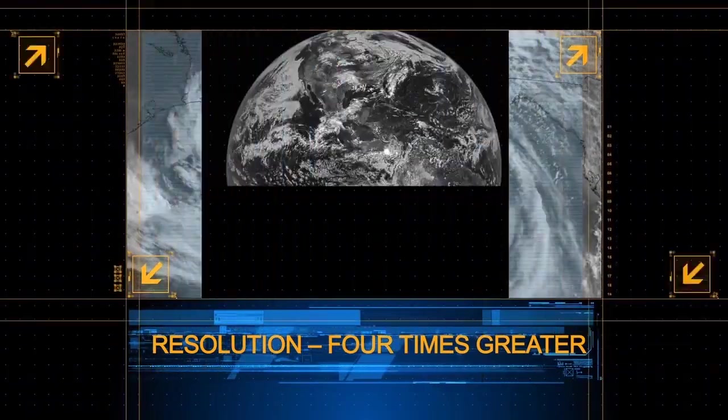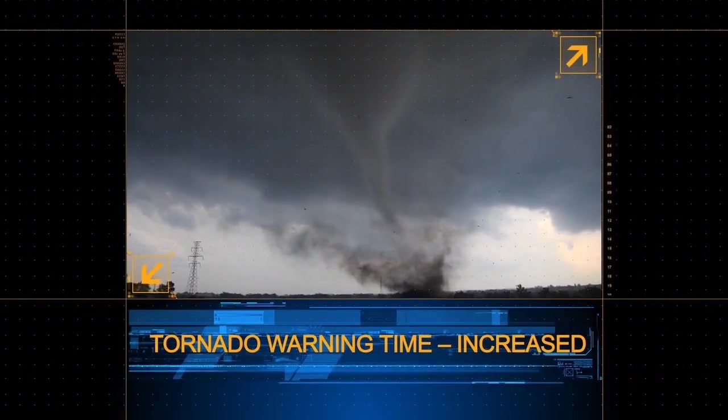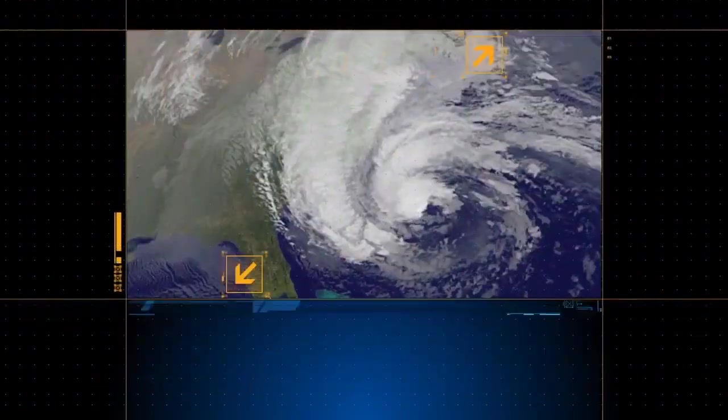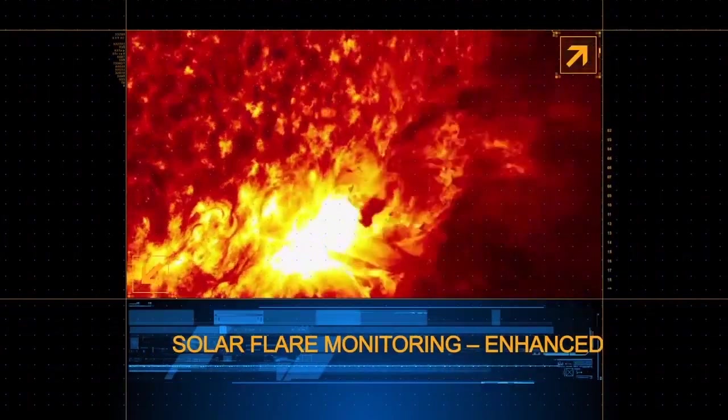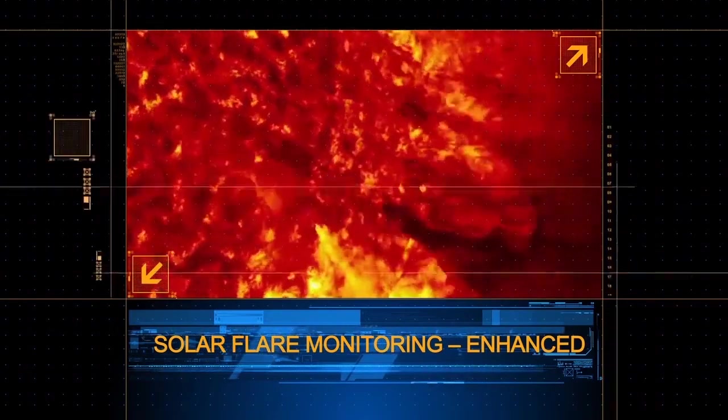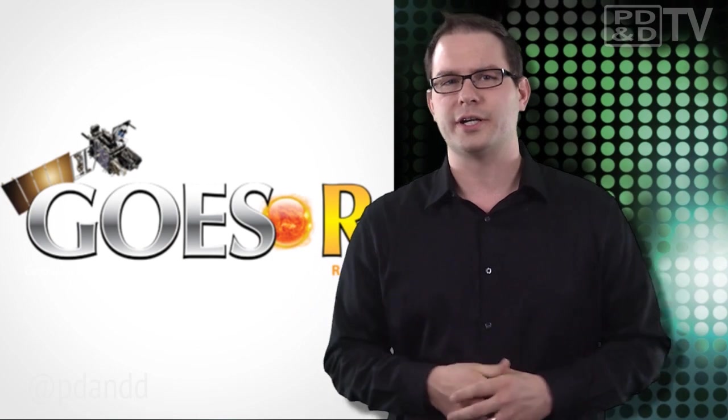Scheduled to launch in 2015, GOES-R satellites are expected to more than double the clarity of today's GOES imagery and provide more atmospheric observations than current capabilities with more frequent images. According to NOAA, extreme solar activity could wreak havoc on the U.S. and global economy, so it's critical for GOES-R to be able to monitor it.